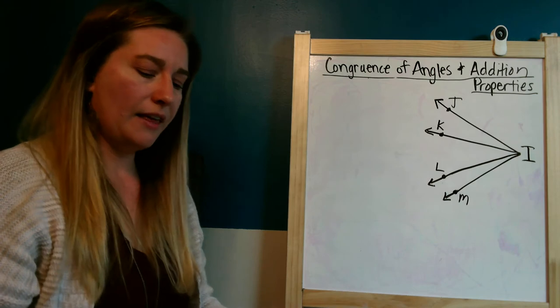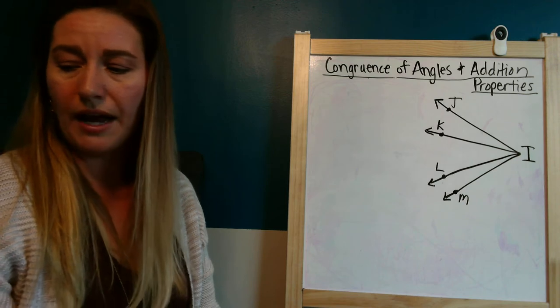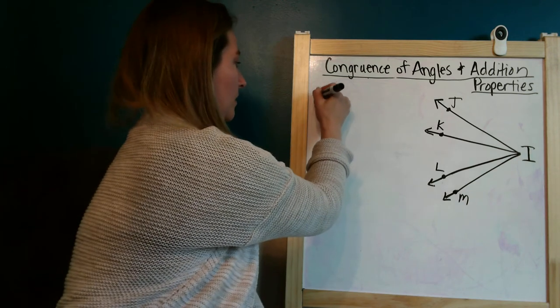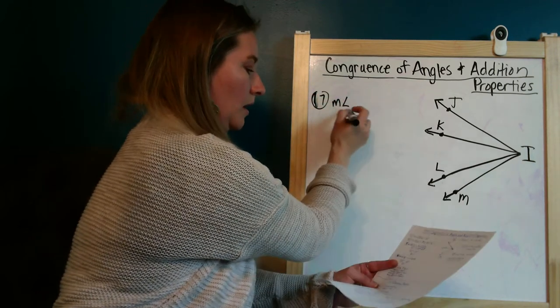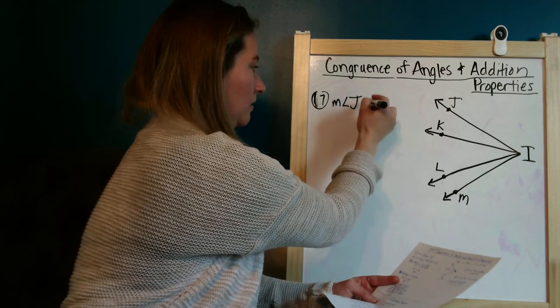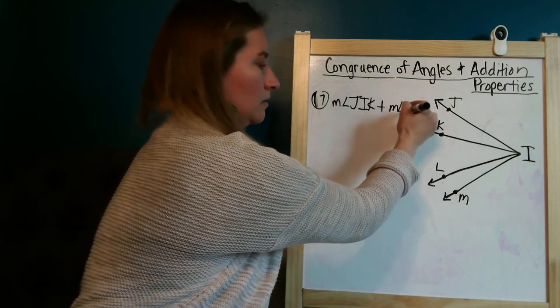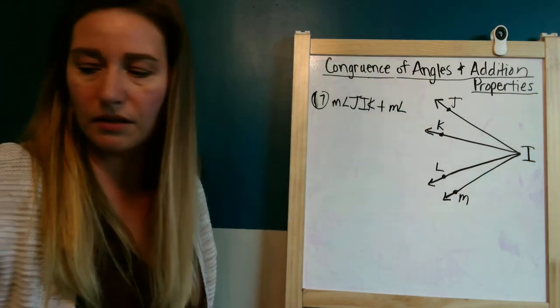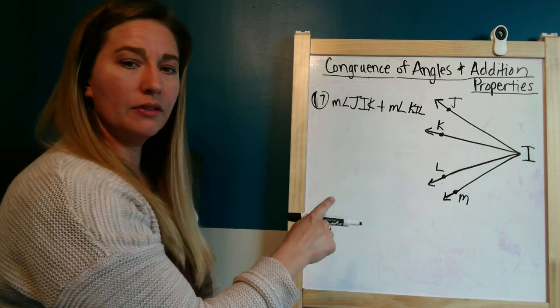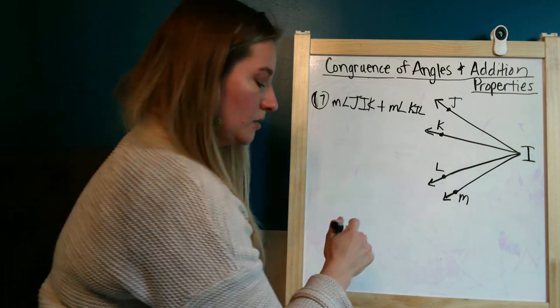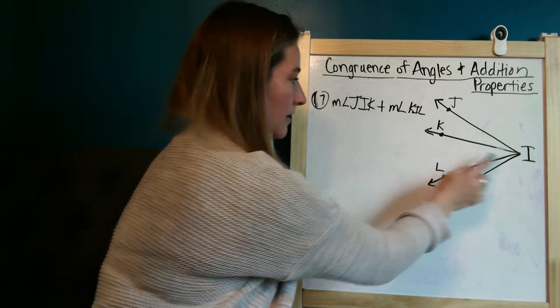And then number 17 asks you to do the measure of angle JIK plus the measure of angle KIL. Okay, so you have to look at the image and determine what that is. So we're looking at JIK and then KIL.